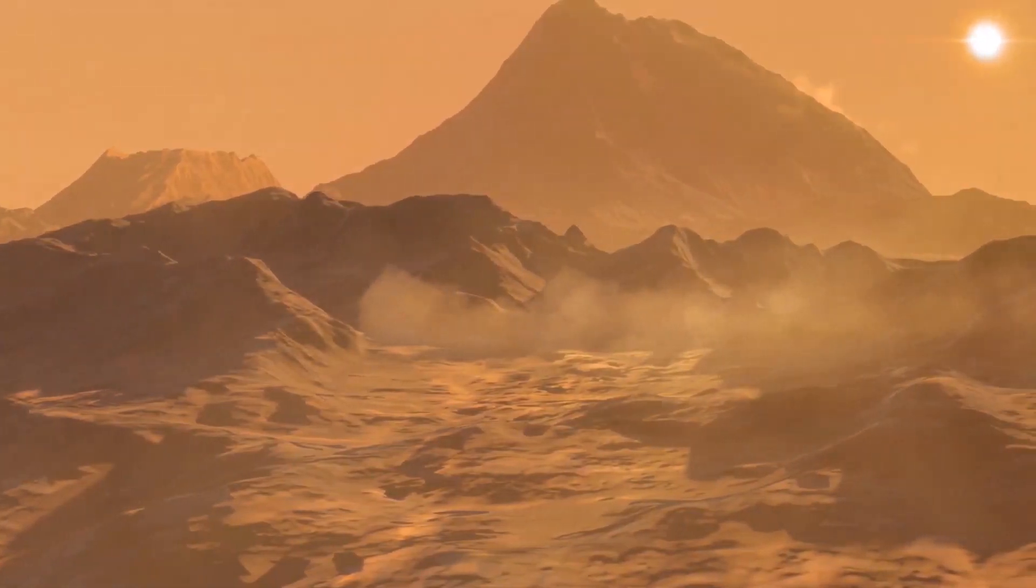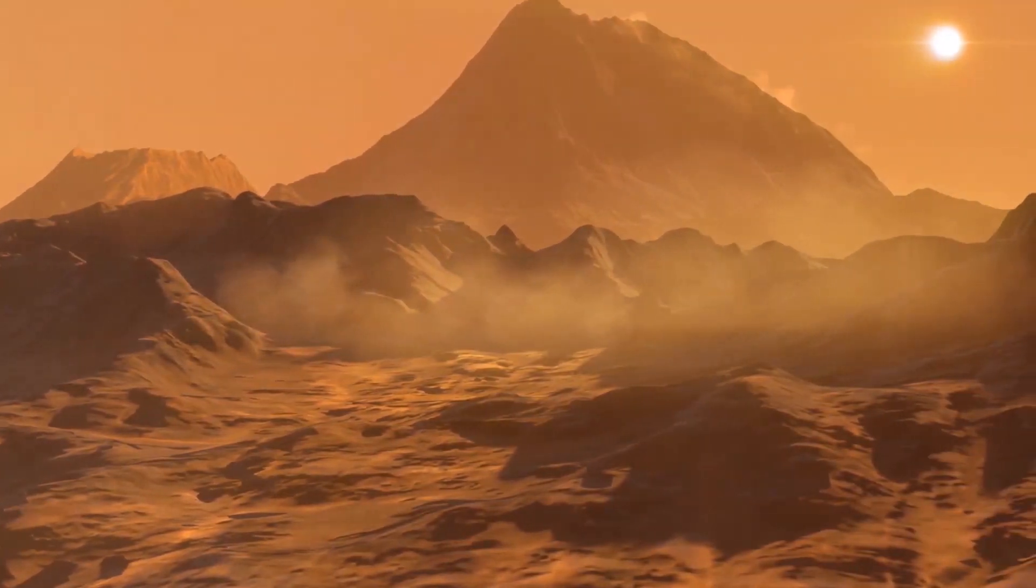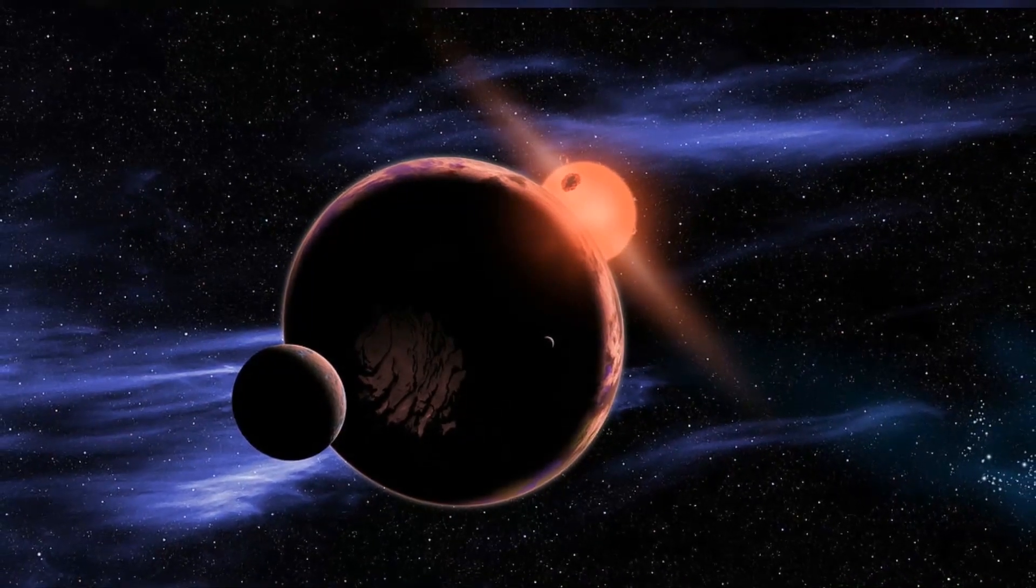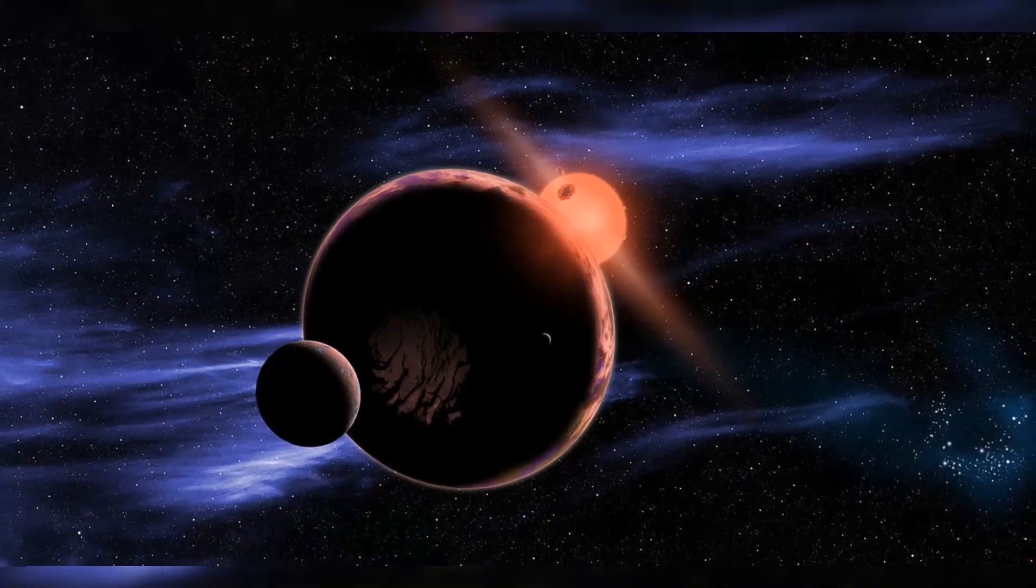If both of the new candidates were to be confirmed, that would mean Proxima Centauri would have at least three planets orbiting it. Proxima Centauri is the nearest star to our Sun, although it is part of a three-star system, including the two stars of Alpha Centauri.